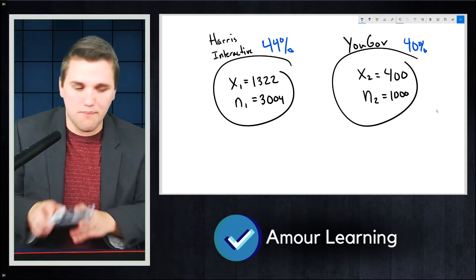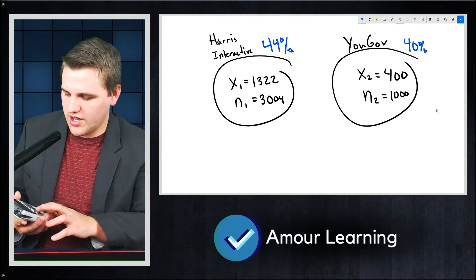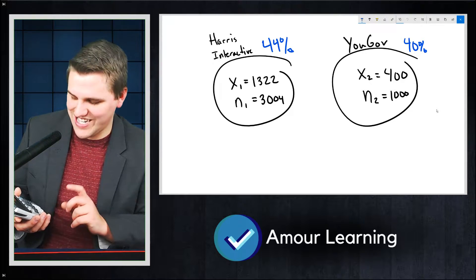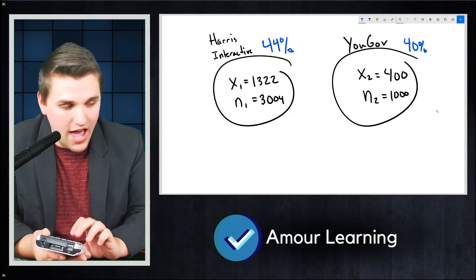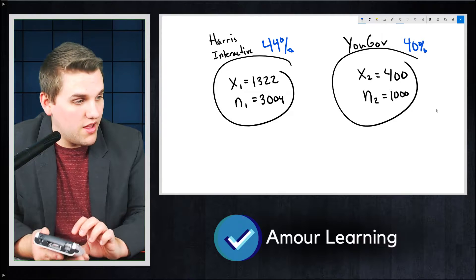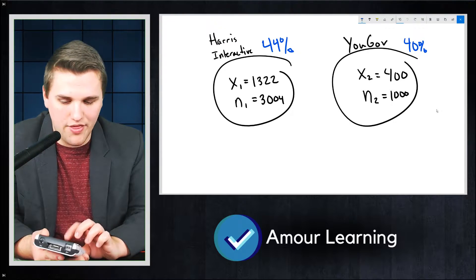So I'm actually going to pull up the calculator. I'm going to go to Stat, go under Tests. I'm going to hit 2 Prop z-test. Now, X1, I have 1322. N1, I have 3004. X2, I have 400. And N2, I have 1,000.